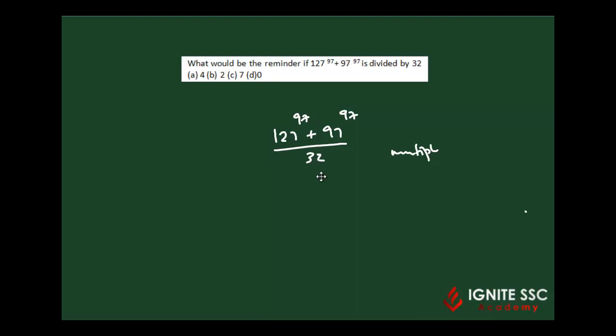127 is 128 minus 1 and 97 is 96 plus 1. So this can be written as (128-1)^97 plus (96+1)^97 whole divided by 32.